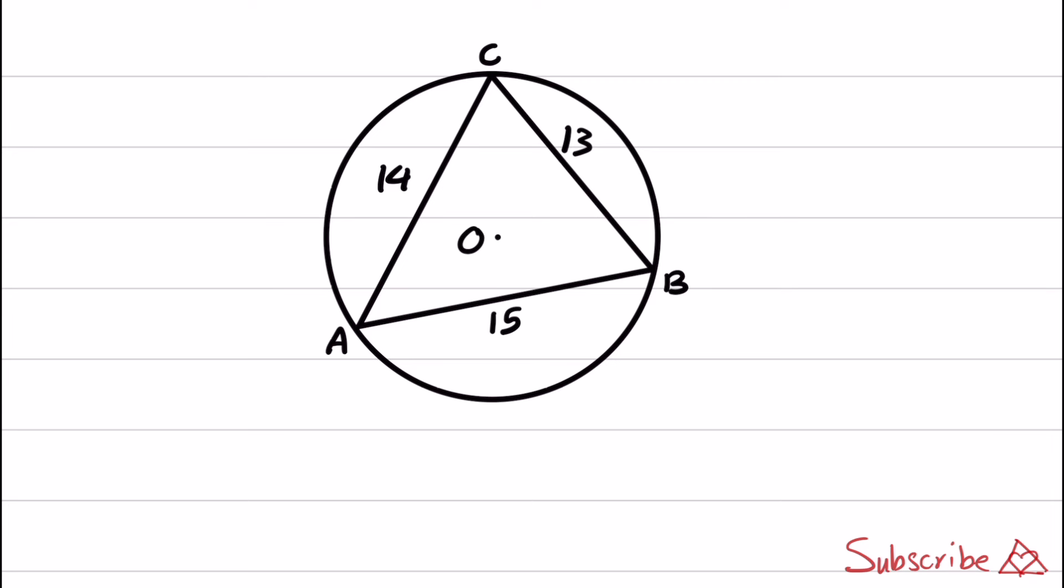Let's start the solution. In the first step, I'm going to connect O to B and O to A. Both OA and OB are the radius of this circle.